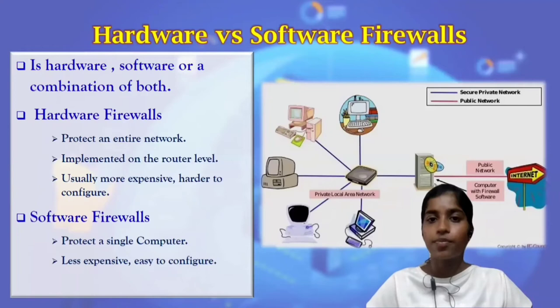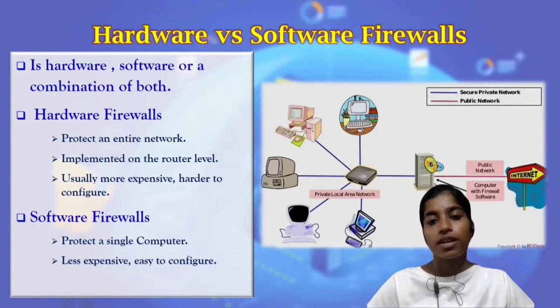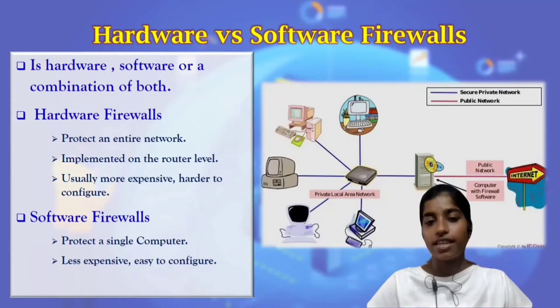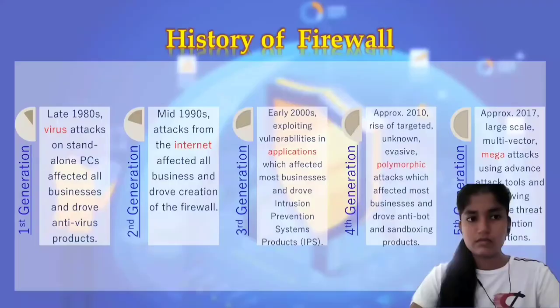Regarding hardware versus software firewalls: a firewall can be hardware, software, or a combination of both. Hardware firewalls protect an entire network, implemented at the router level — usually more expensive and harder to configure. Software firewalls protect a single computer, are less expensive, and easier to configure.